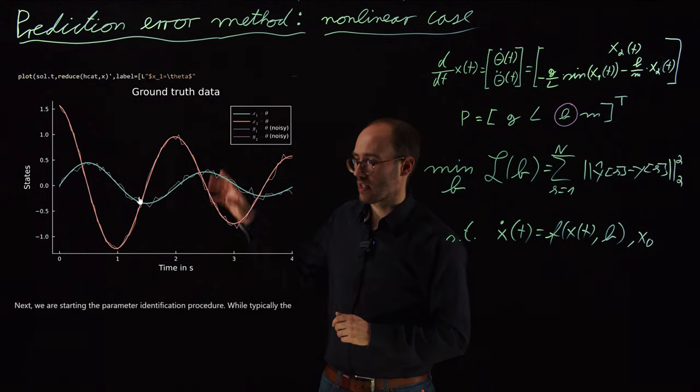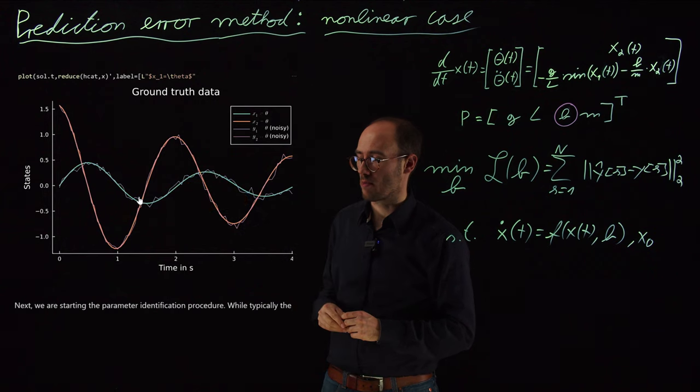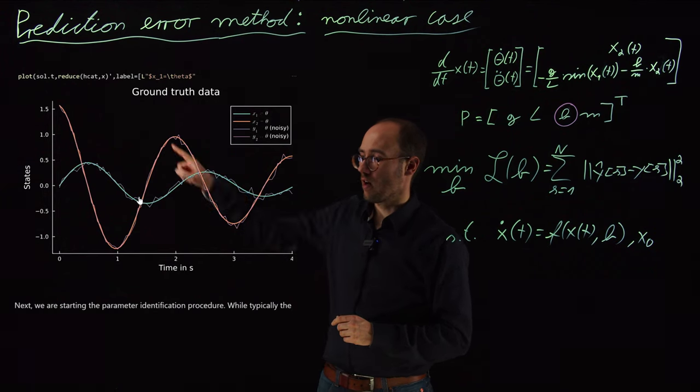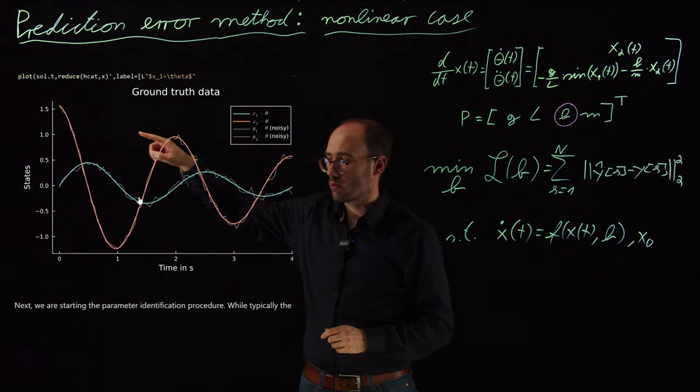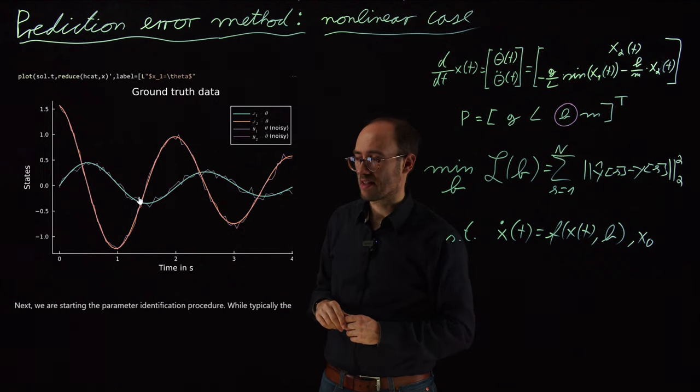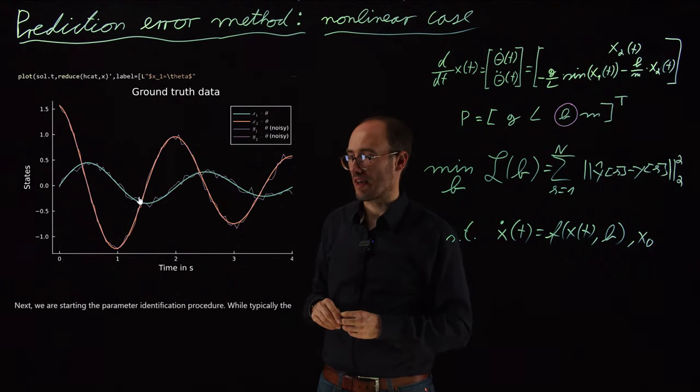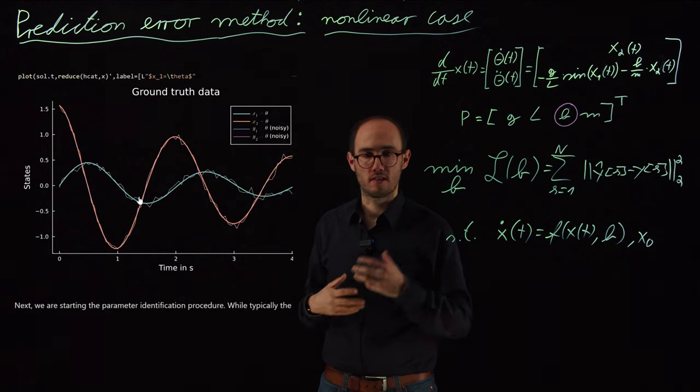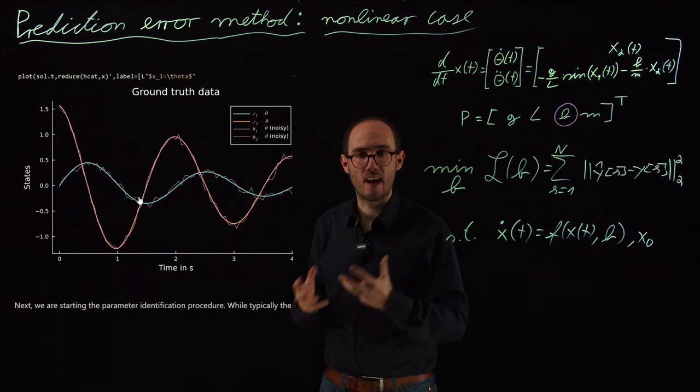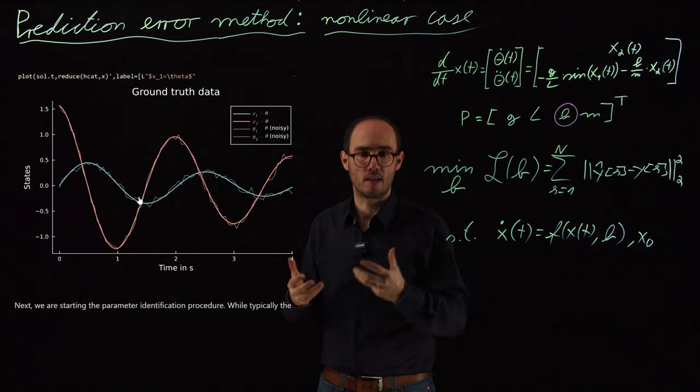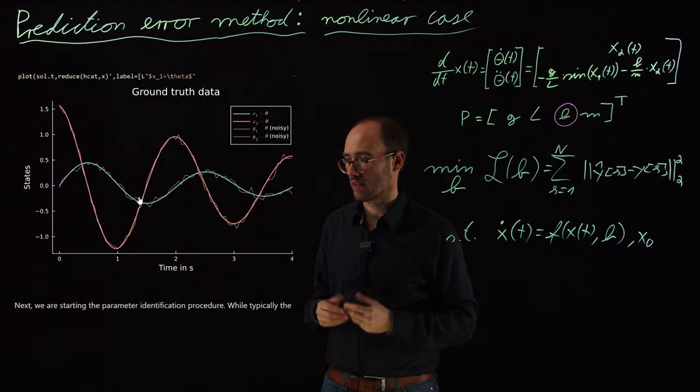What we get is basically just the usual oscillatory behavior of the pendulum. However, we can see, due to this friction which we have modeled, that the amplitudes of the oscillations are decaying because the friction is basically getting energy out of the system and that means that the oscillation is damped over time.